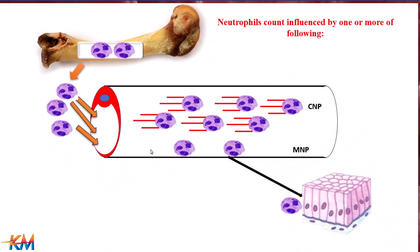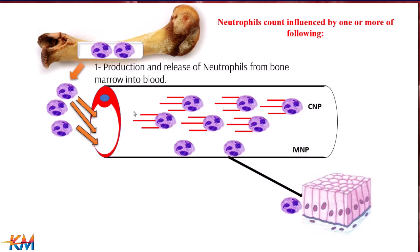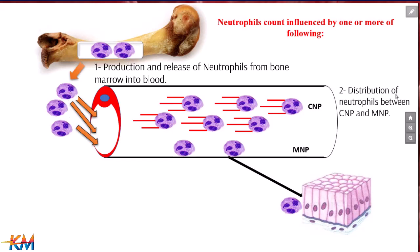There are three factors that can increase or decrease neutrophils in the bloodstream. The first is the production and release of neutrophils from the bone marrow into the blood. If production is increased in the bone marrow, neutrophilia will occur. The second factor is the distribution of neutrophils between the central and marginal neutrophilic pools.